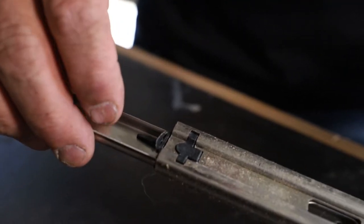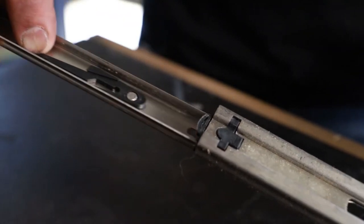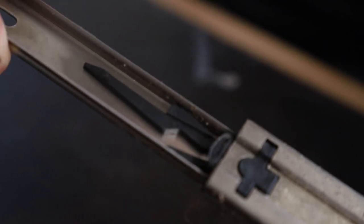This little plastic lever is the key. Pushing that lever up like that releases this, which is attached to the drawer. So your drawer becomes free from the slide. That's the key.